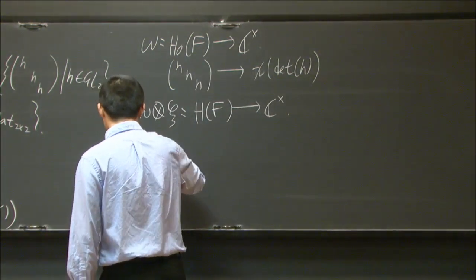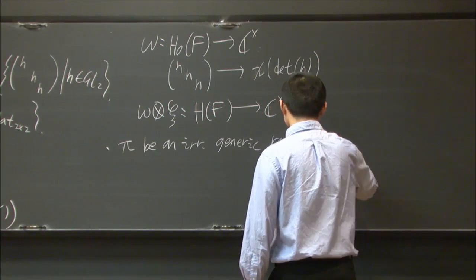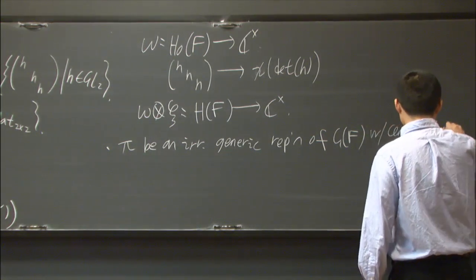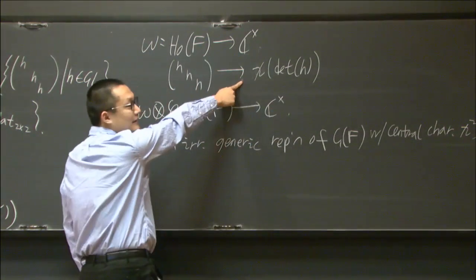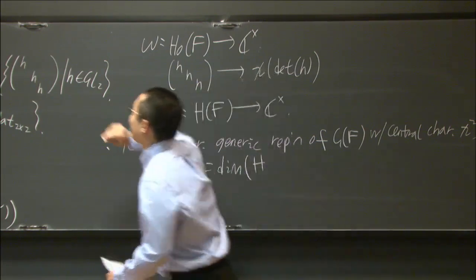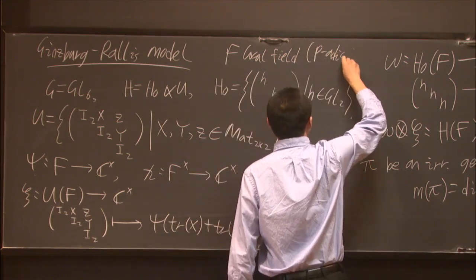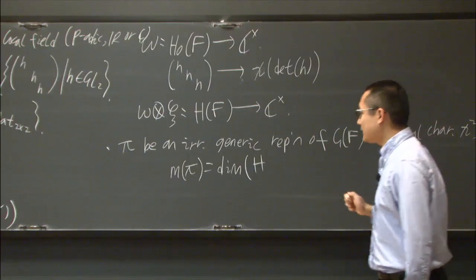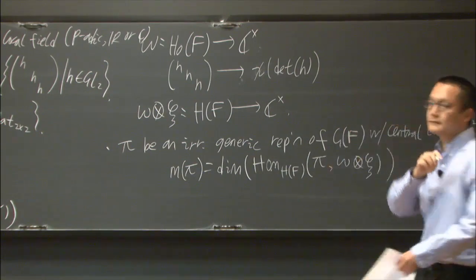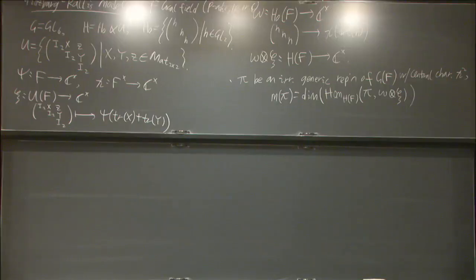Then let pi be an irreducible generic representation of G(F). Here generic means it has a Whittaker model and with the central character chi squared. The central character is just to match the character here, so it's not a big deal. Then we can define the multiplicity m_pi to be the dimension - I should tell you F is a local field of characteristic zero, so in other words it can be p-adic, ℝ, or ℂ. Now the multiplicity will be the dimension of Hom_{H_F}(pi, omega ⊗ C). So we have our first model - this is GL_6 with some H, and we can define the multiplicity. But in order to consider the formulation of the L-packet, you also have to consider some forms of this G, H.